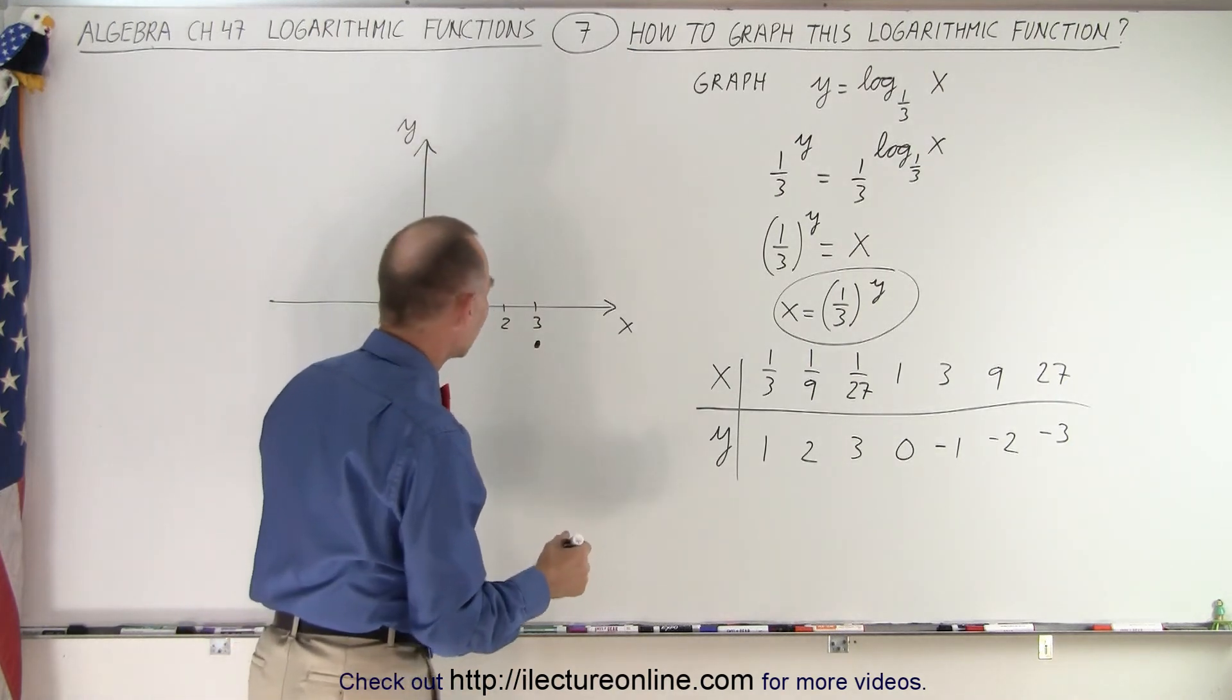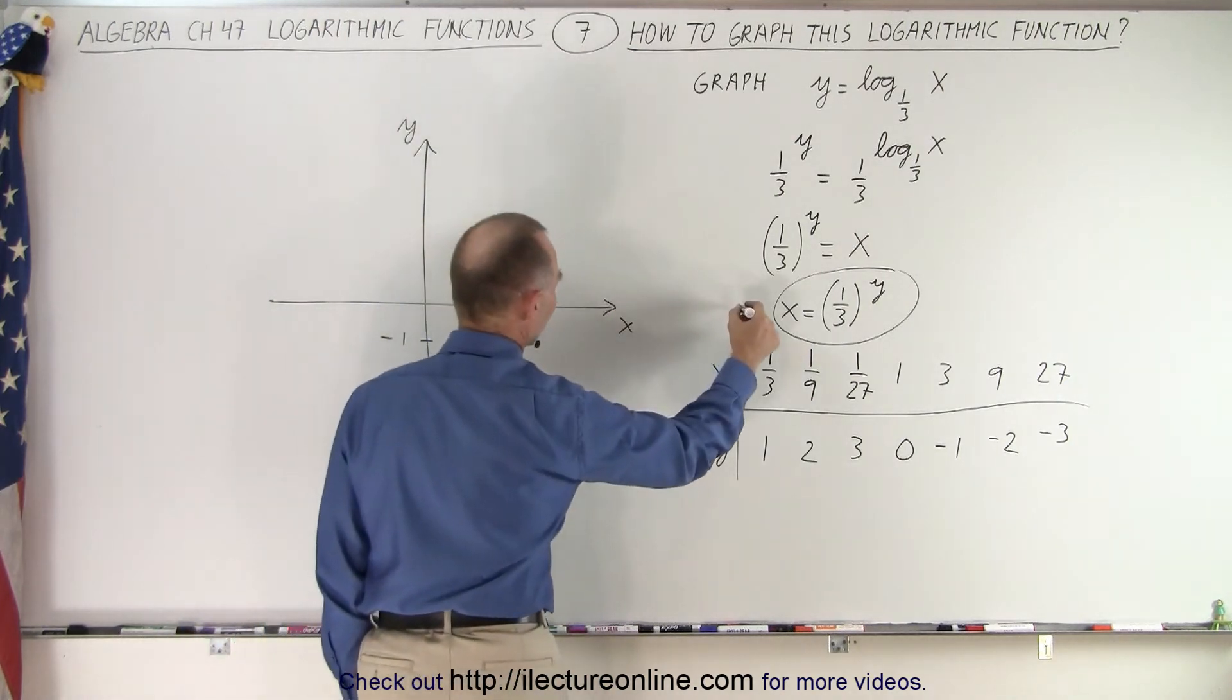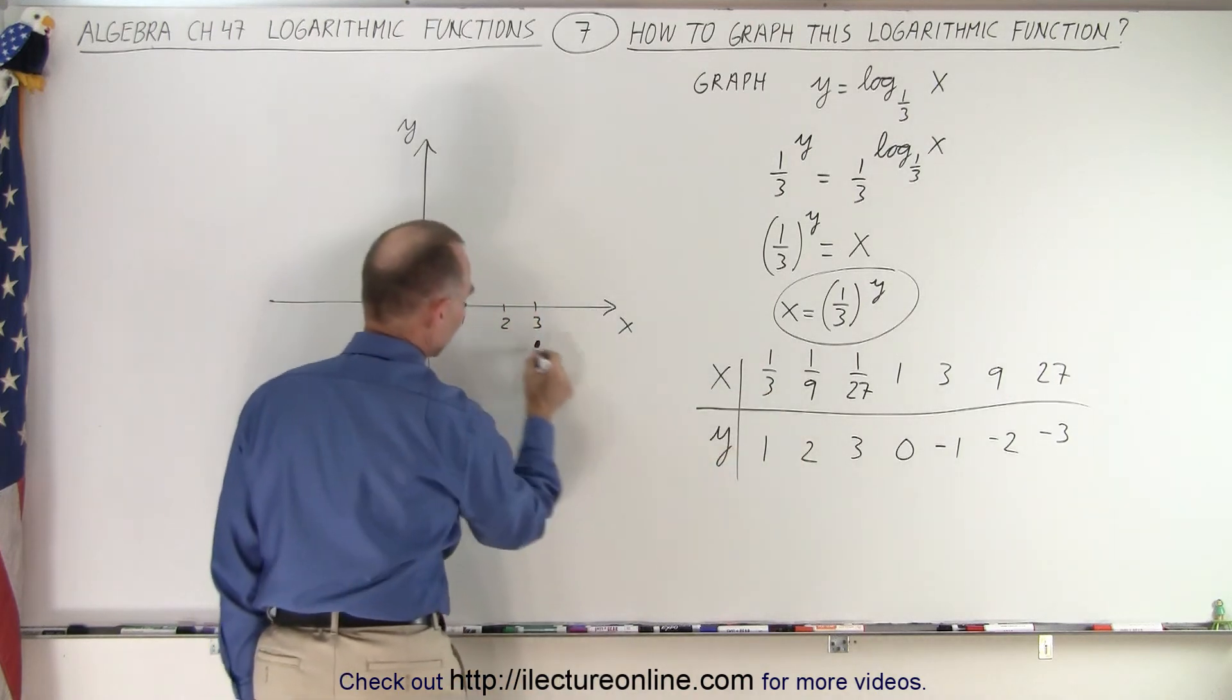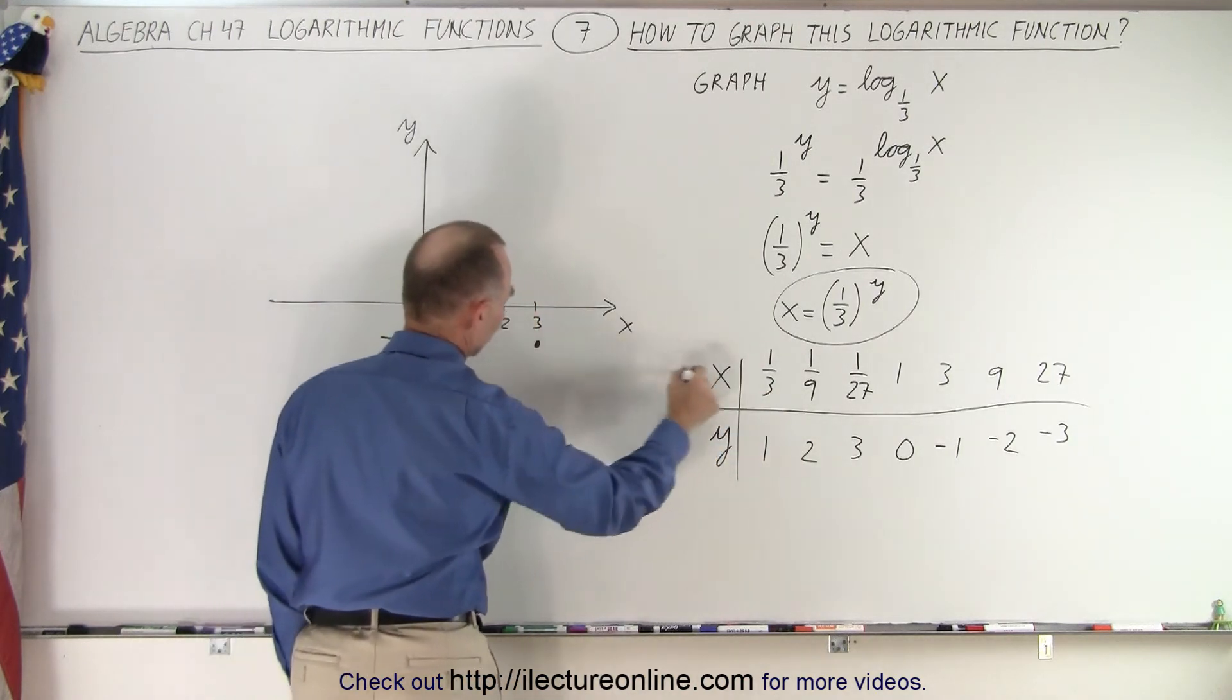And if x equals 9, then it's negative 2. So 9 would be somewhere over here. It would drop down to about here. So you can see that it looks like the curve is going to go like this.